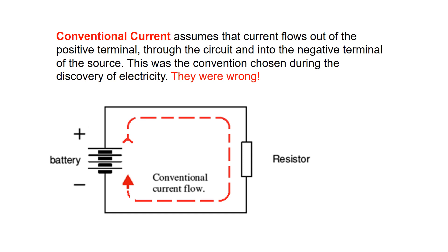Conventional current flows from the positive terminal. It was assumed in the initial days that the current flows out of the positive terminal. So if you have a circuit with a battery connected to one or more resistances, the current was assumed to start flowing from the positive terminal. This was an assumption in the earlier days. But later on, it was found that this convention is wrong, because the electron — the negative charge — flows from the negative terminal of the battery.